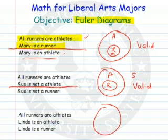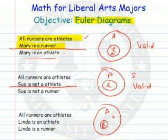Last one. All runners are athletes — here are my athletes, here are my runners. Linda is an athlete, is my second premise. So Linda could fit in here, or Linda could fit in there. So can I conclude for sure that Linda's a runner? Well, she may be, she may not be. This is an invalid argument.